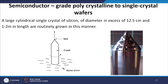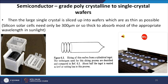Large cylindrical single crystals of silicon with a diameter exceeding 12.5 cm and 1 to 2 meters in length are routinely grown this way. The ingot is very large and must be cut using a diamond saw into silicon wafers. The large single crystal is sliced into wafers as thin as possible — silicon solar cells need only 300 micrometers thickness to absorb most of the appropriate wavelengths of sunlight.